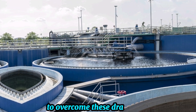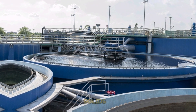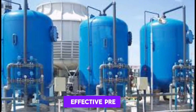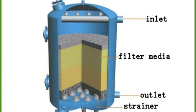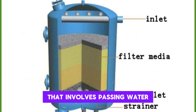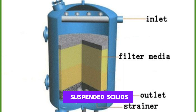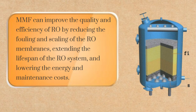To overcome these drawbacks, RO plants often use pre-treatment methods to reduce the level of suspended solids, turbidity, color, and microorganisms in the feedwater. One of the most effective pre-treatment methods is multimedia filtration, MMF. MMF can improve the quality and efficiency of RO by reducing the fouling and scaling of the RO membranes, extending the lifespan of the RO system, and lowering the energy and maintenance costs.